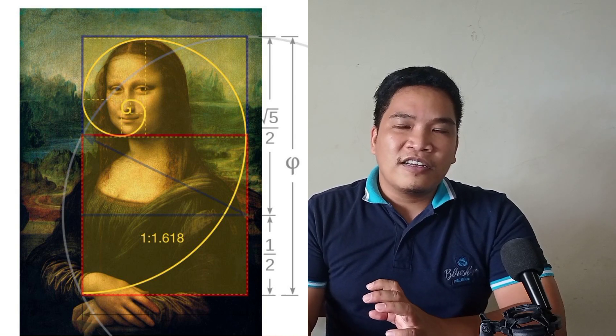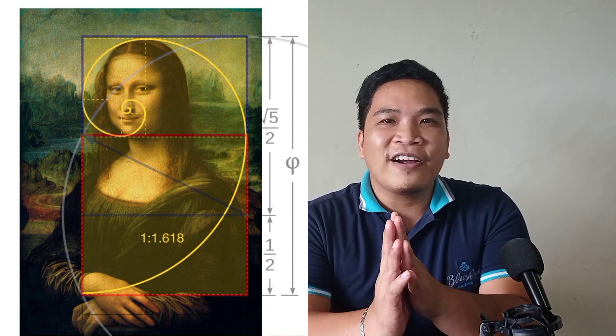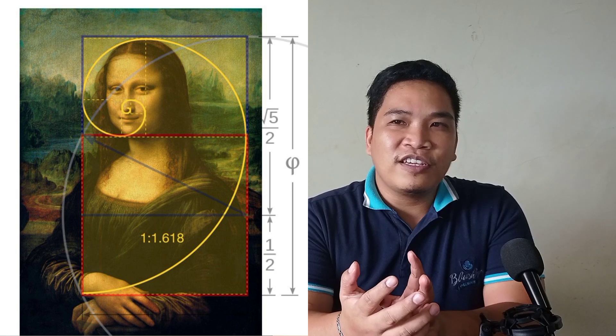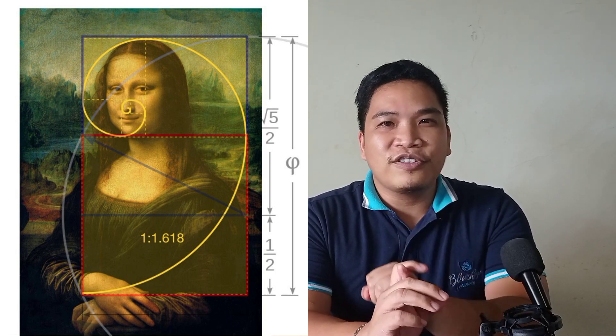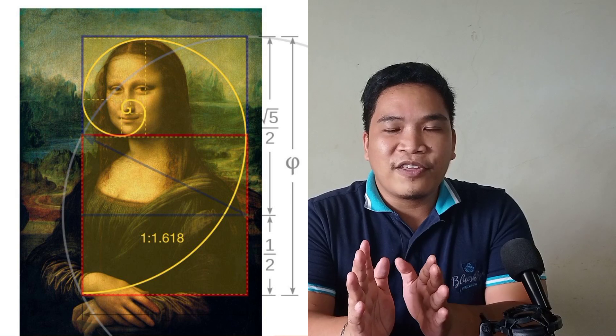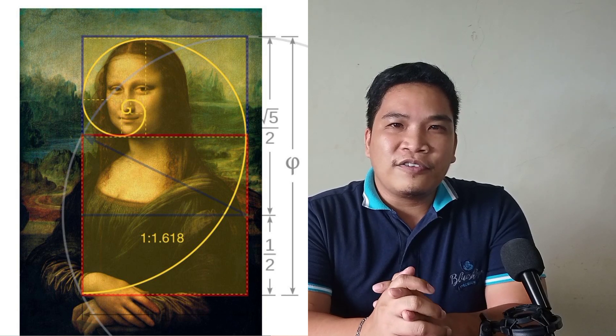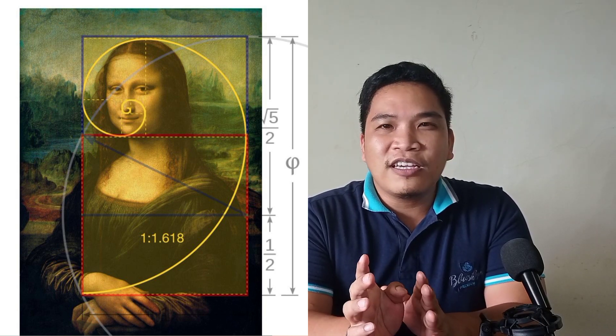The reason those artworks are still well known today is that one key factor is the use of the golden ratio. When something is attractive, it tends to stay longer in our memory and be retained. That is why paintings that used the golden ratio are still appreciated by new generations.